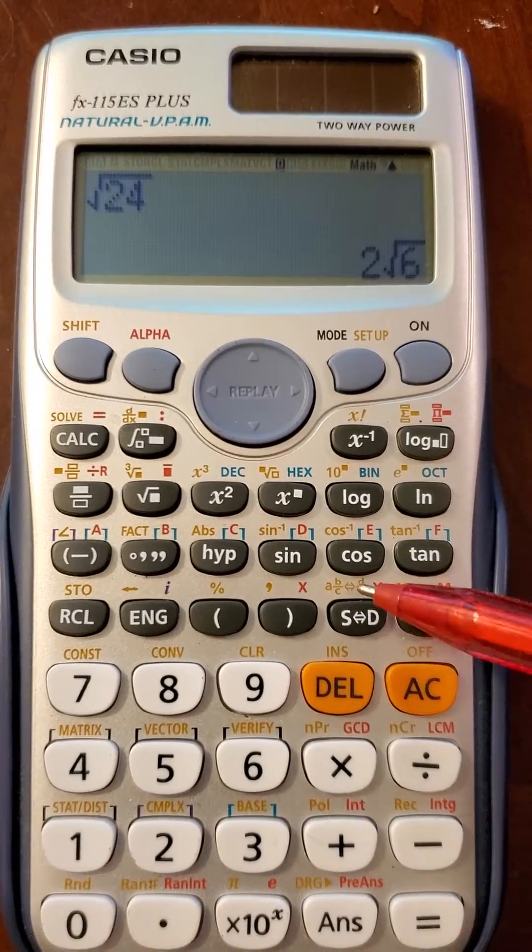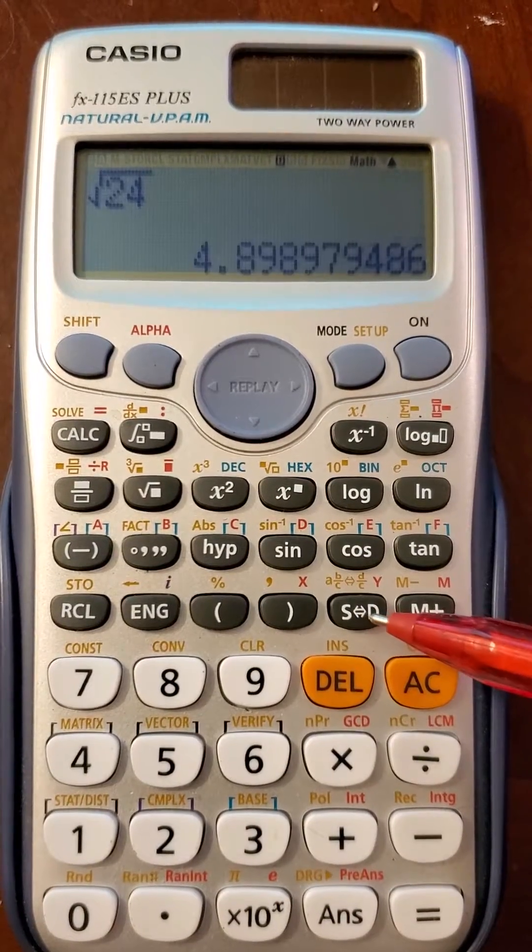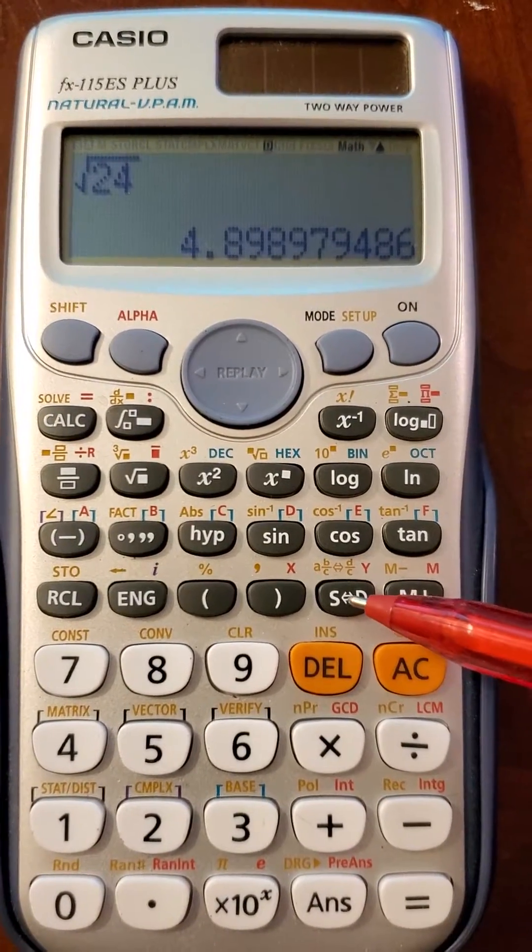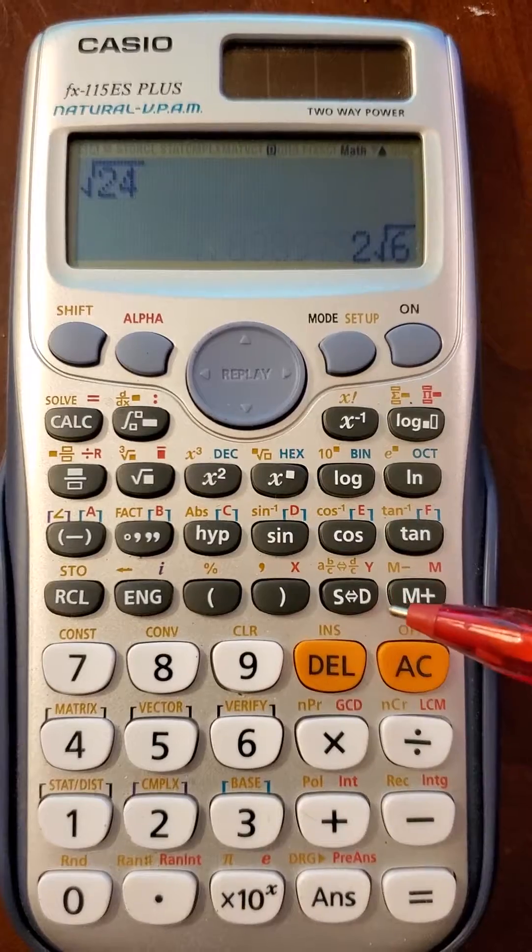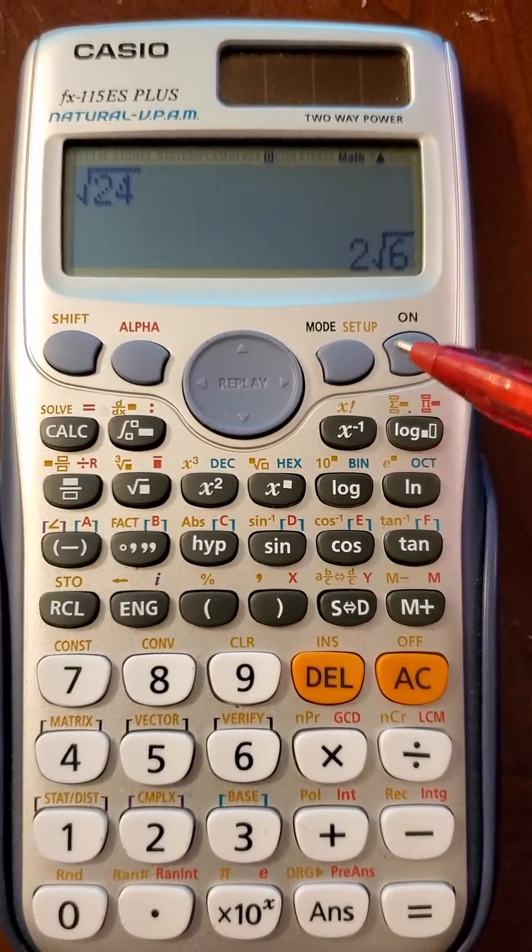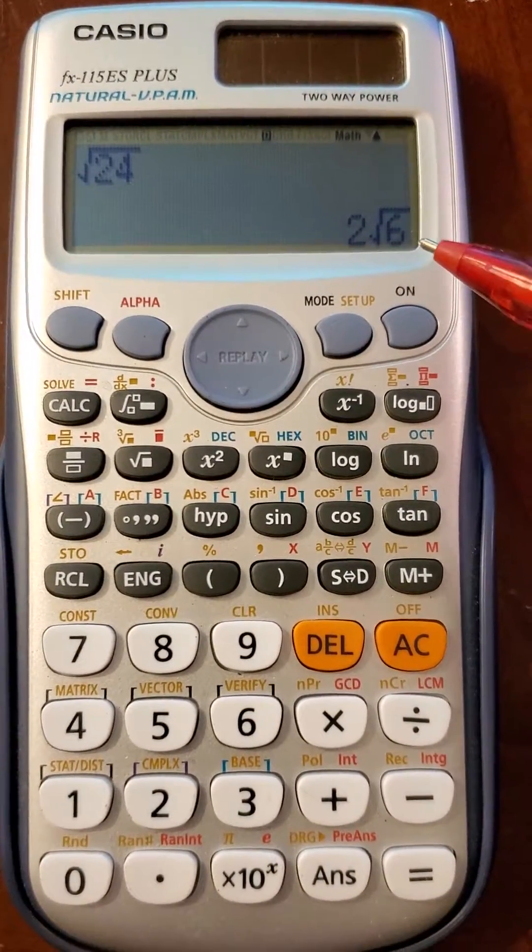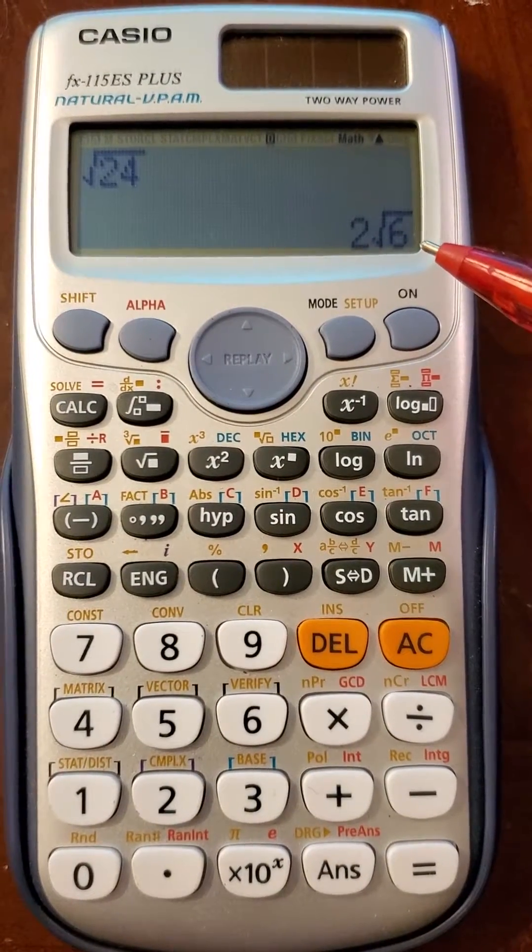If I need that to be a decimal, I can hit the SD button, gives me a decimal. If I hit the SD again, back to the simplified radical. So this calculator will simplify radicals for you.